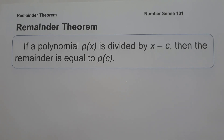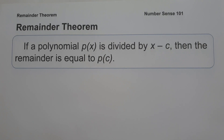When we say remainder, it is the quantity left after a number or expression that can no longer be divided exactly by another number or expression. The remainder is zero if the number or a certain expression can be divided exactly. Those are the basic concepts that you need to remember in studying the remainder theorem.